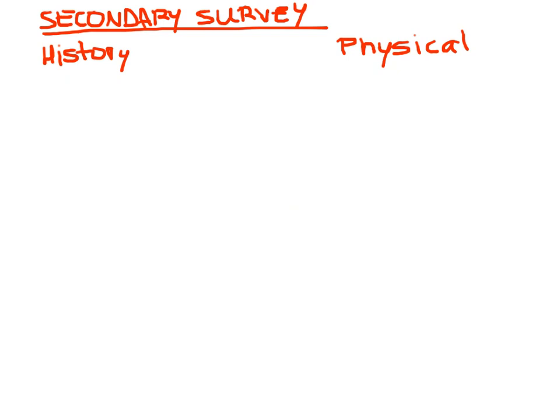Now let's move on to our secondary survey. Getting a history from a patient with altered mental status is obviously going to be difficult — by definition their mental status is not intact, so they really can't give you a history. Make sure you go to other sources: ask their family, friends, any caretakers or nursing home workers. Call the nursing home — it's important. These are invaluable sources of information.